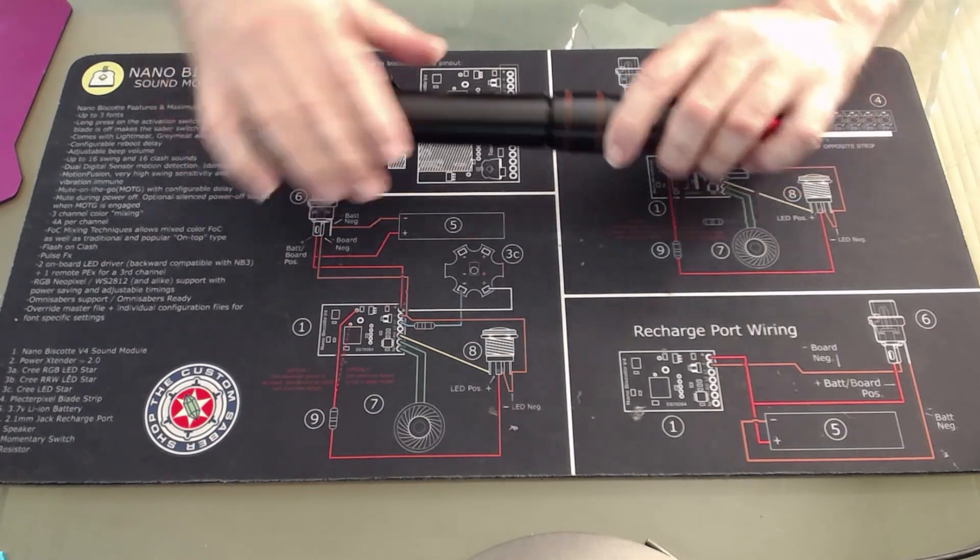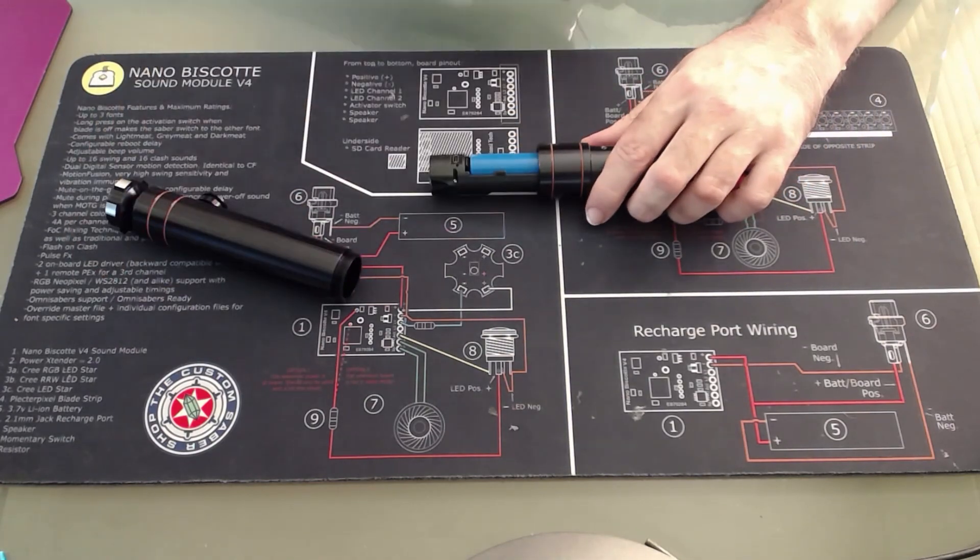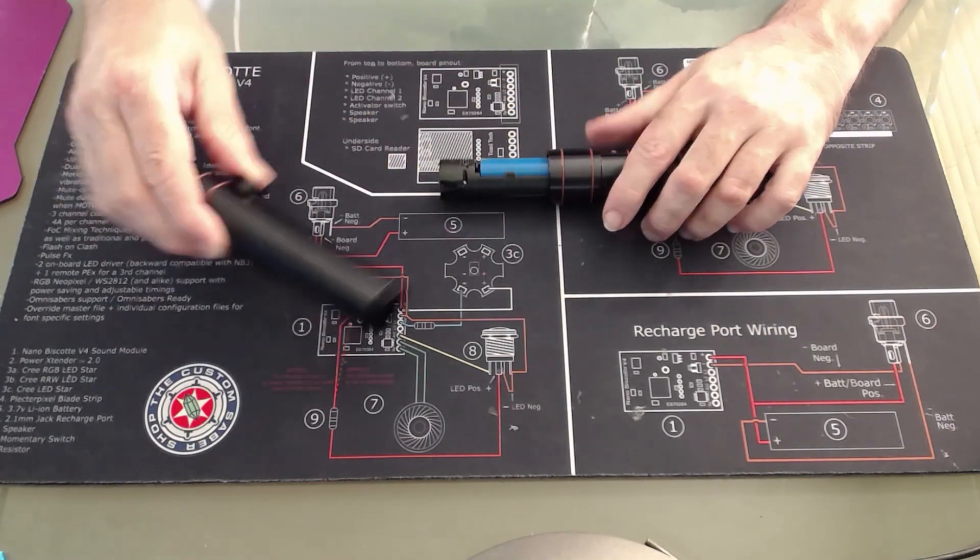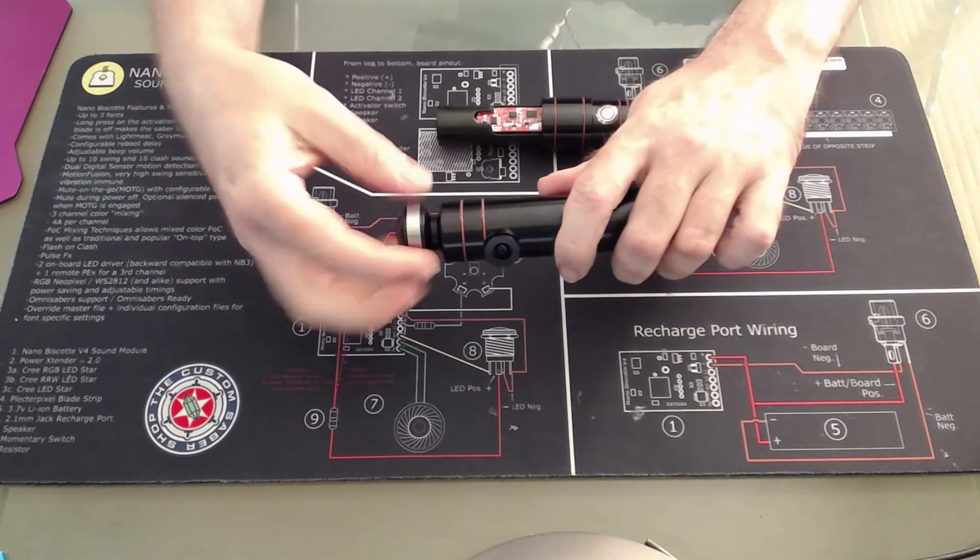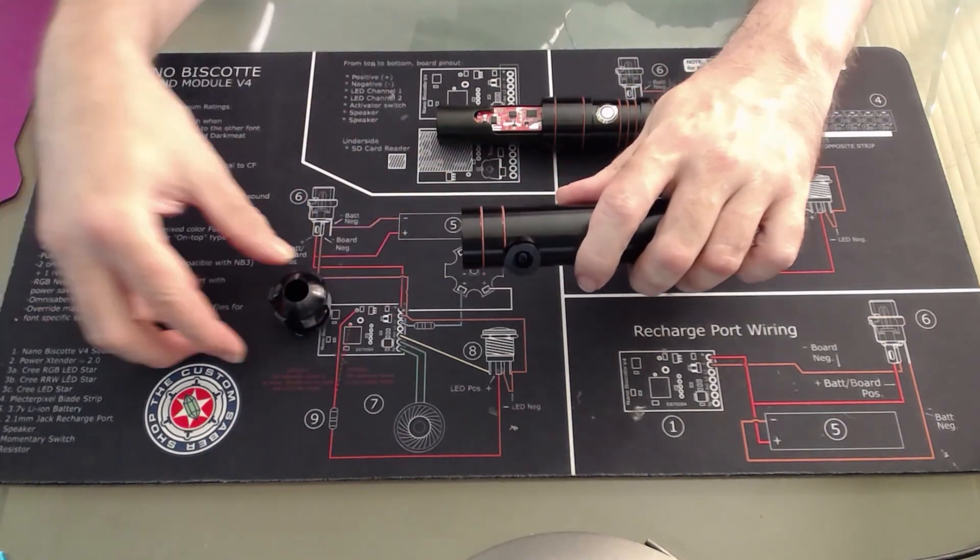Some of our sabers have removable chassis, so they will differ from this style in that in order to access the chassis you remove the pommel and pull a removable chassis out.